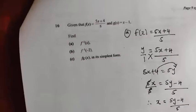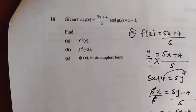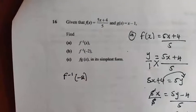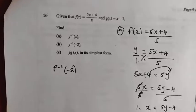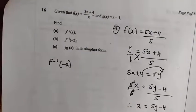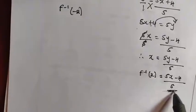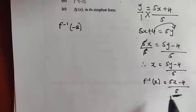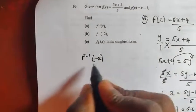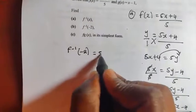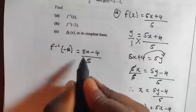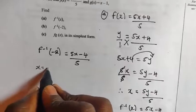Let's come to question b, where they want you to find the function inverse of negative 2. This will be very easy because you already have your function inverse. This function inverse of x is the one right here. So this negative 2 is representing x — wherever there is x, your x will be replaced with negative 2.